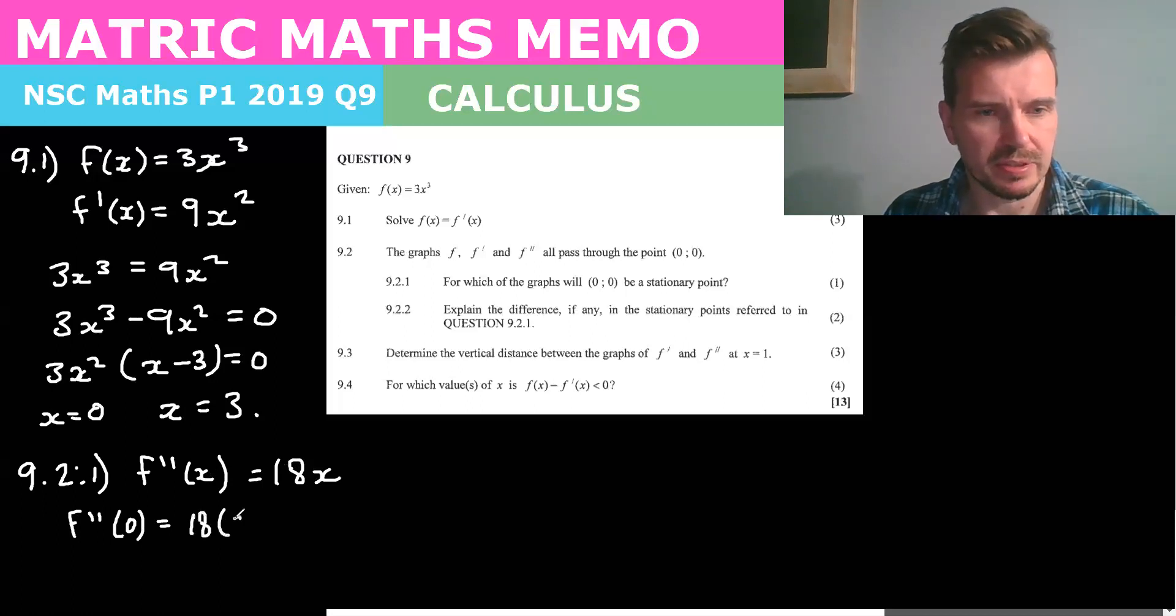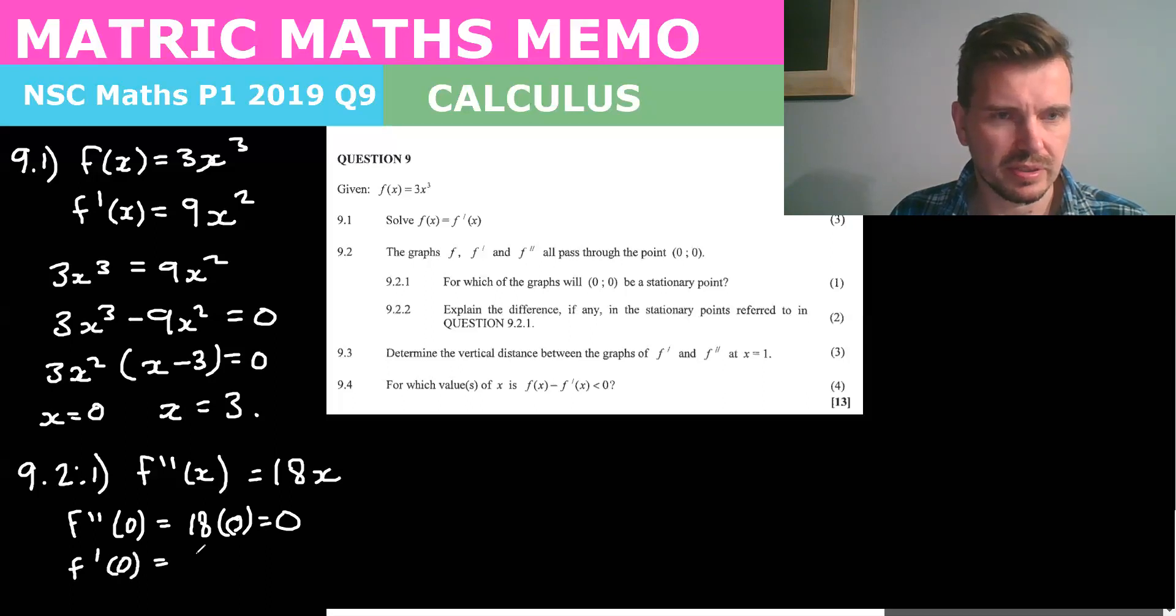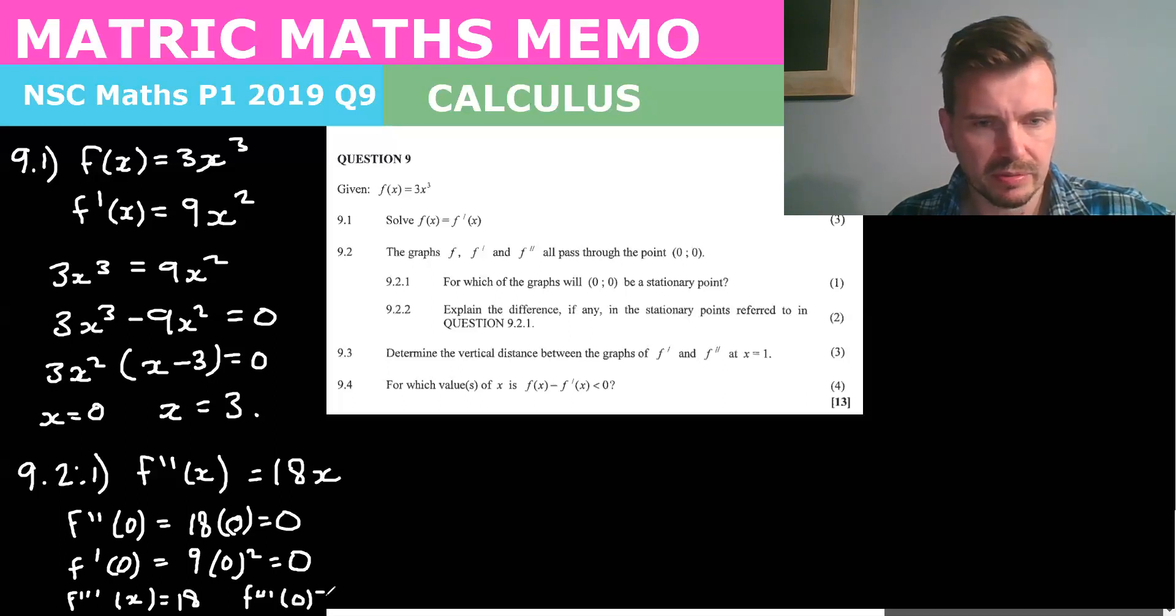In other words f double prime of 0 equals 0, which is 18 times 0 which is equal to 0. And remember the double derivative is the derivative of the slope of f dash of x. So that means that has a derivative of 0. And we also know that f dash of 0 is 9 times 0 squared which equals 0. And finally the derivative of f double dash of x is equal to 18 and so in that case f double prime of 3 is equal to still 18.